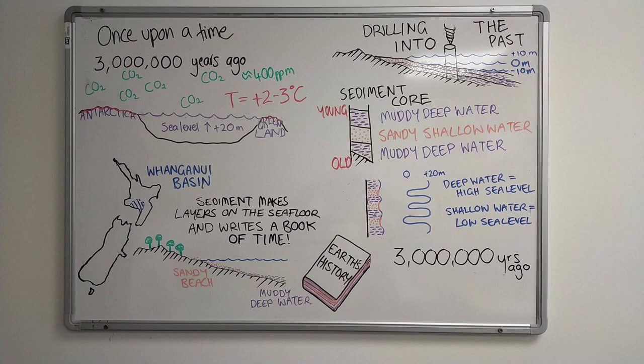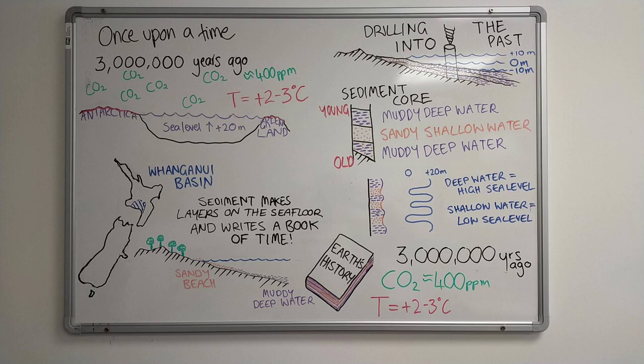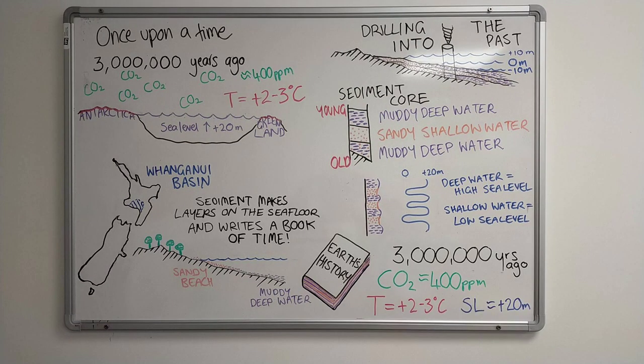3 million years ago, when CO2 was the same as today, temperatures were warmer and sea level was 20 metres higher.